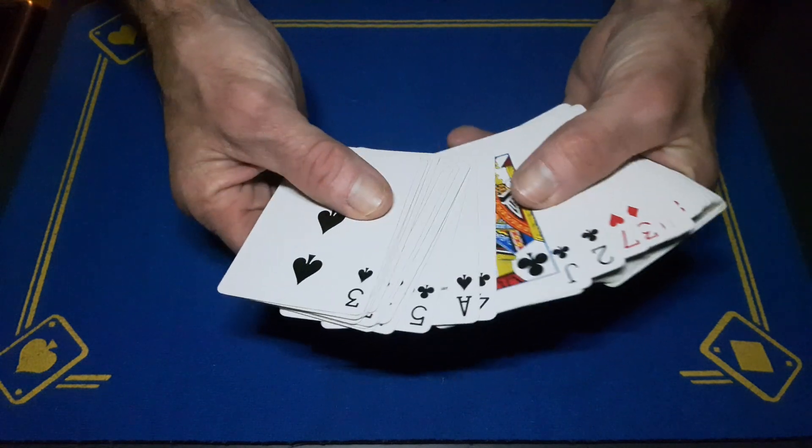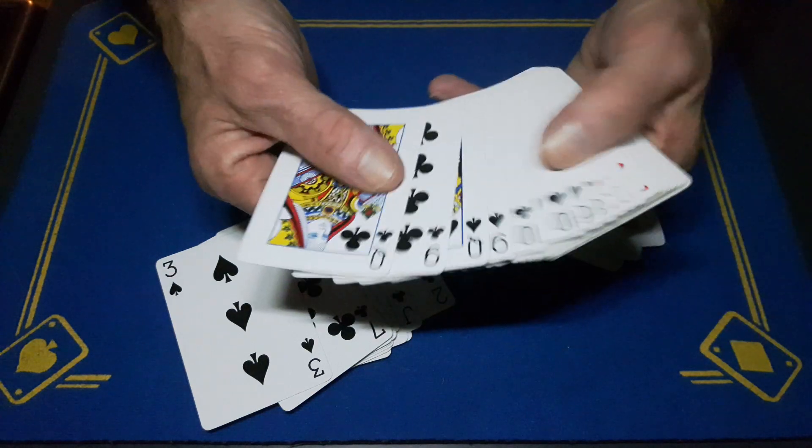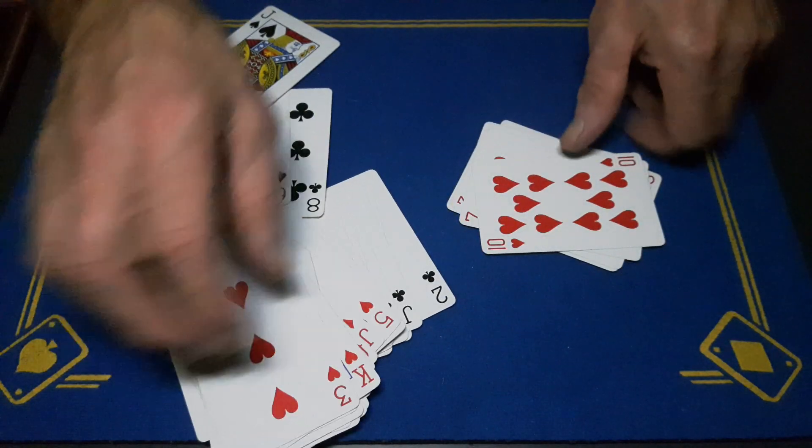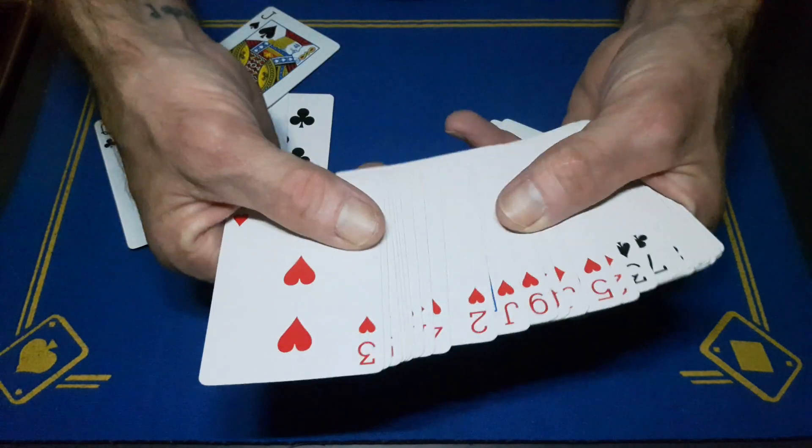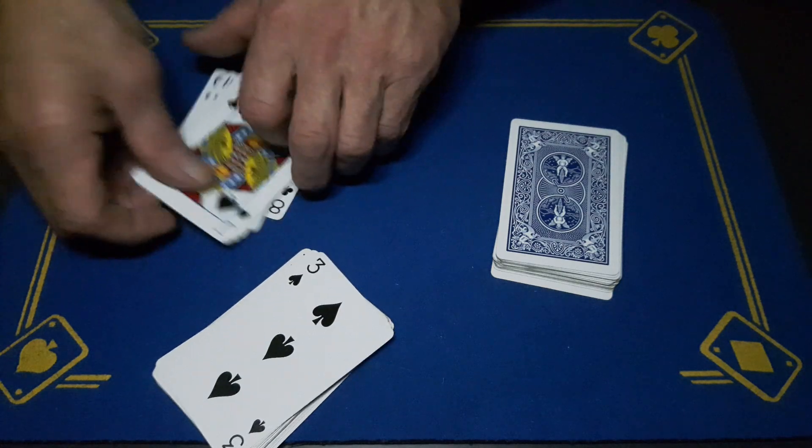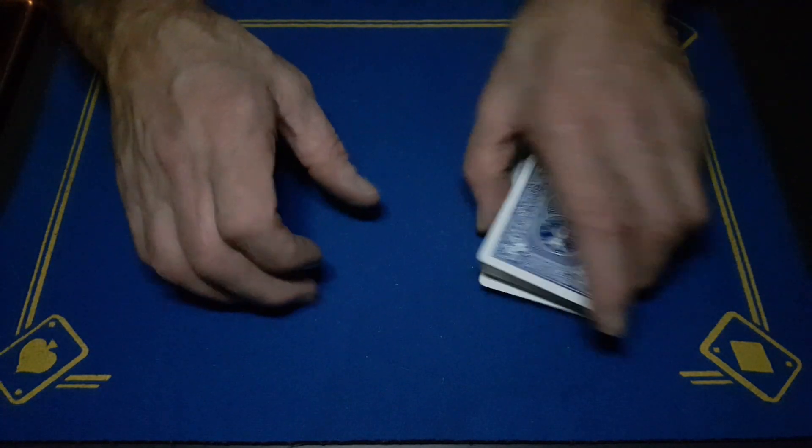That card should have been there. So have I done that wrong? Now the red, the red card... oh yeah, I've cocked it up a little bit. I want to make sure this is right. So your crimp will go on the bottom of the black pile, which will be on the top of the deck.